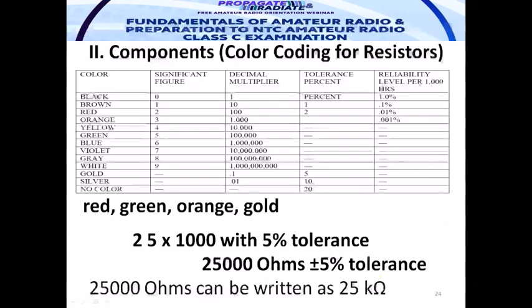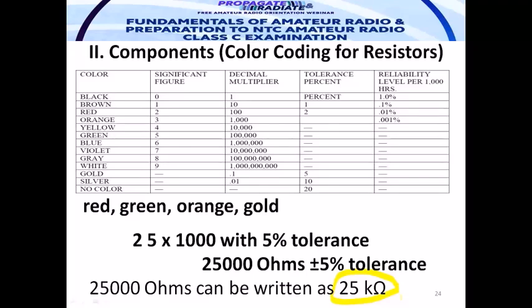As mentioned, writing 25,000 ohms is somewhat long — we can use the SI prefix: 25 kilohms rather than 25,000 ohms. That is how SI units help us. Similarly, in the marketplace, it is easier to say '1 kilogram of fish' rather than '1,000 grams of fish.'